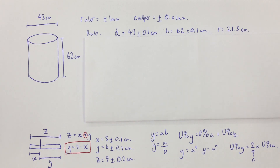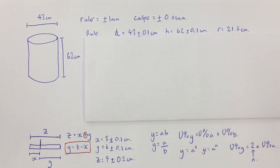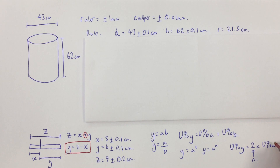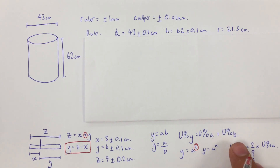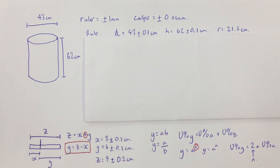If an equation has a squared value, to find the percentage uncertainty in Y, we multiply the percentage uncertainty in A by the power. So for squared, we multiply by 2. For any power N, we multiply by N — for example, if it's cubed, we multiply by 3. Those are our rules about uncertainties.